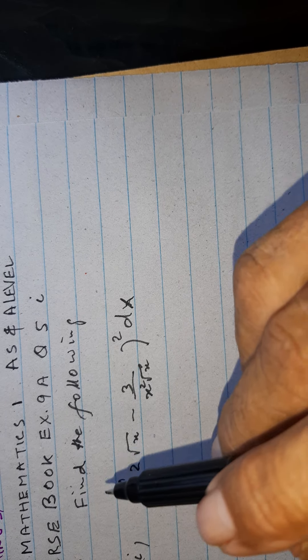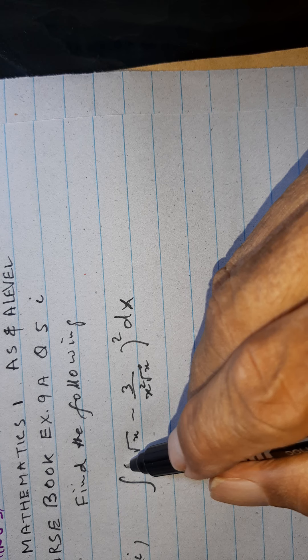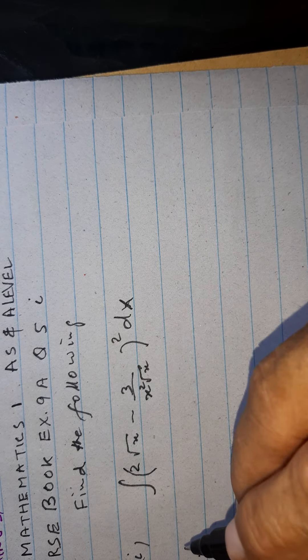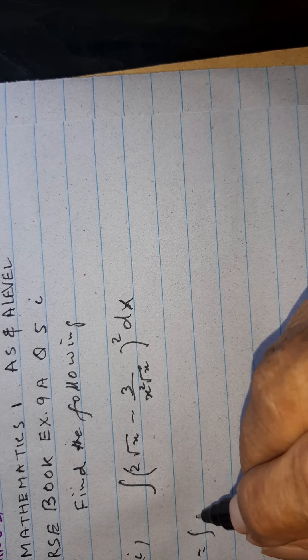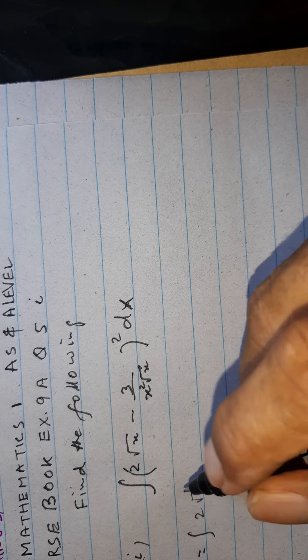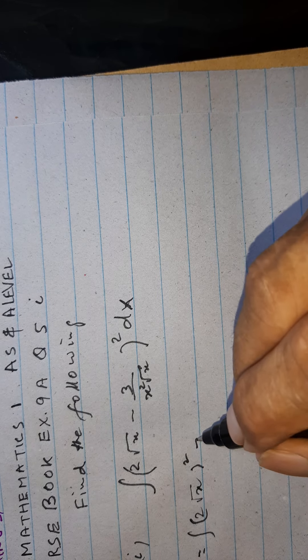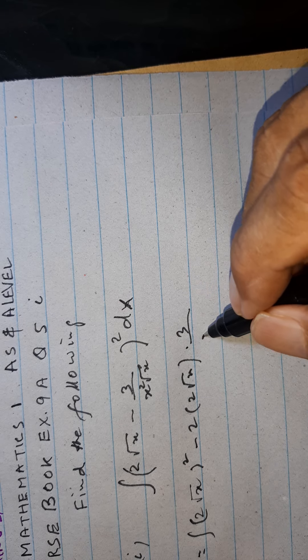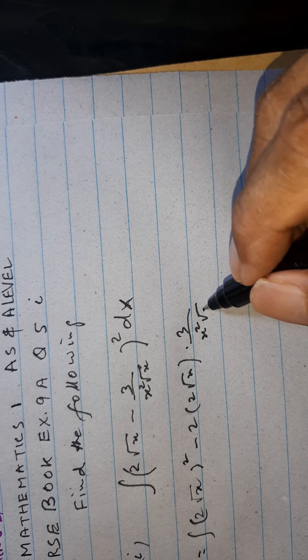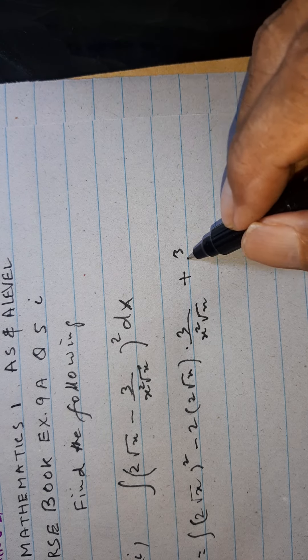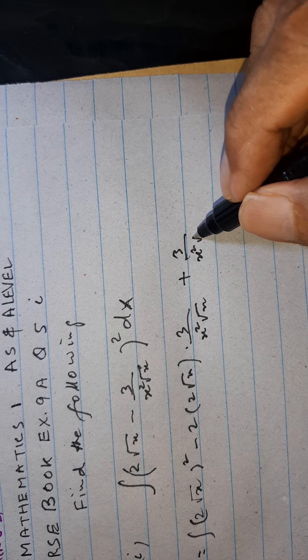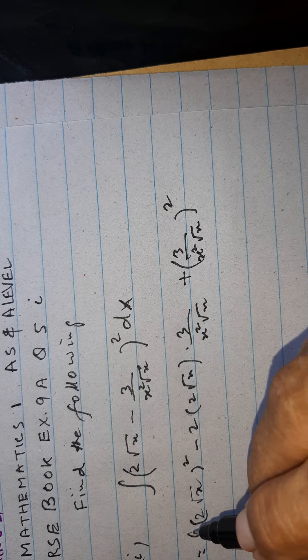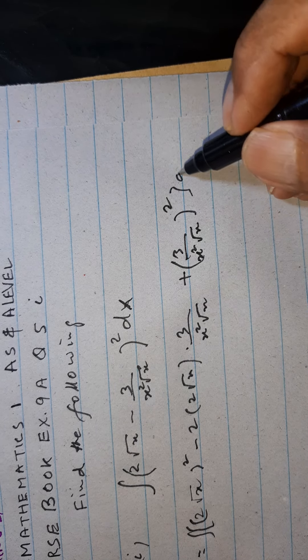we expand this here with a minus b whole square formula. This will be 2 root x whole square minus 2 into 2 root x into 3 x square root x plus 3 x square root x whole square dx.